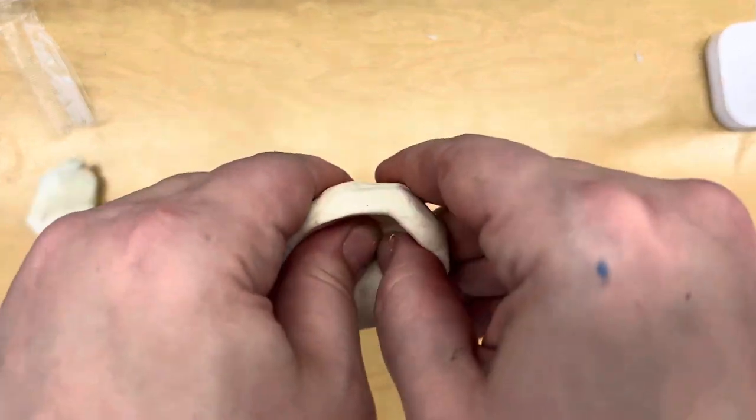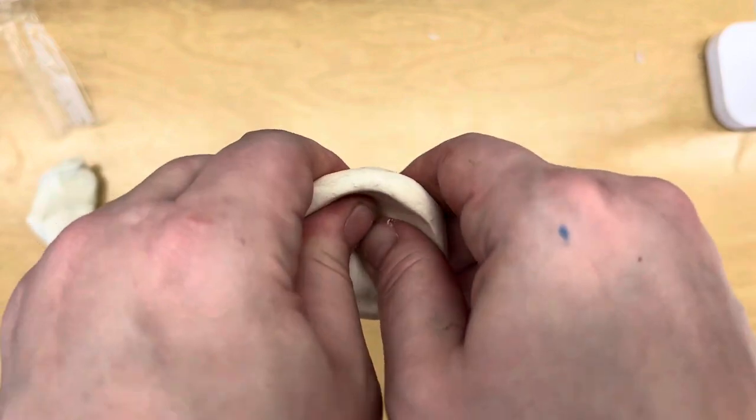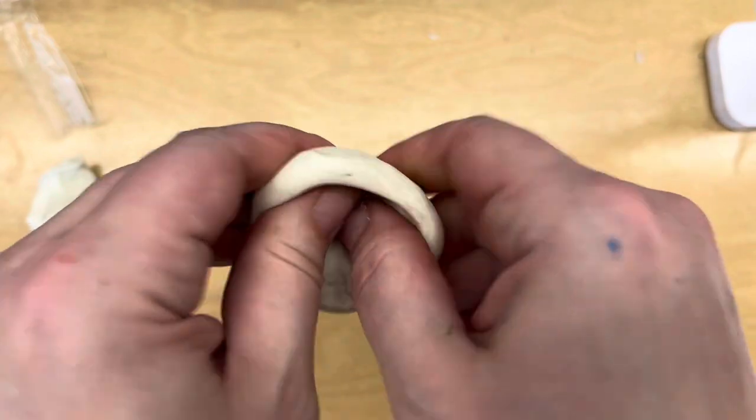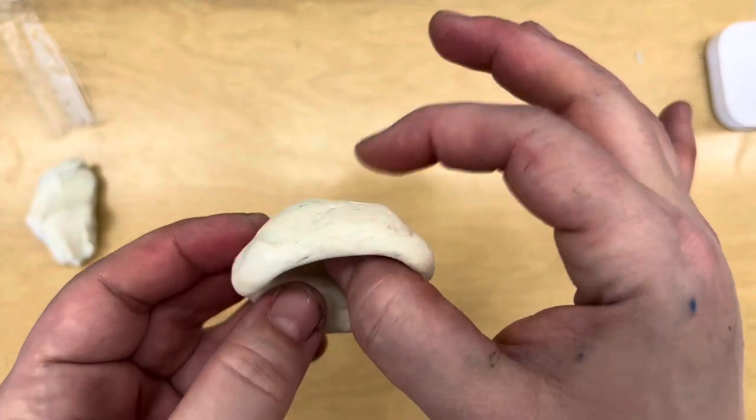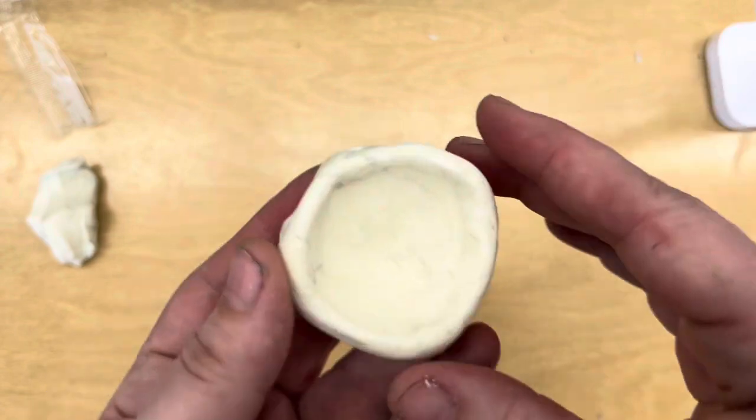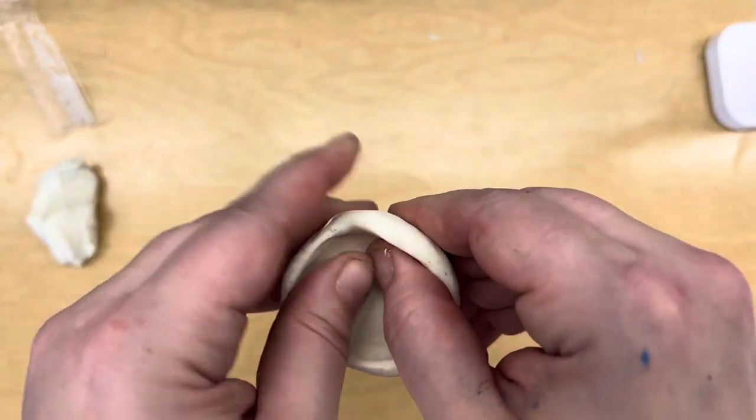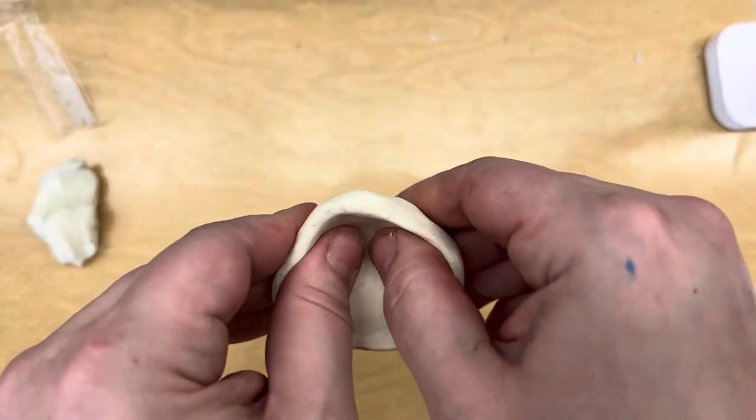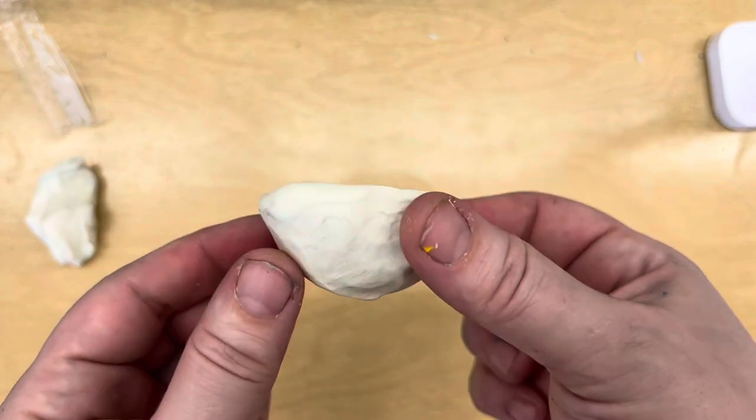See how I'm turning and pinching. My thumbs are digging deeper. My fingers are feeling the thickness and I'm trying to make it even all the way around. This is a very small one to make a very tiny fruit bowl.